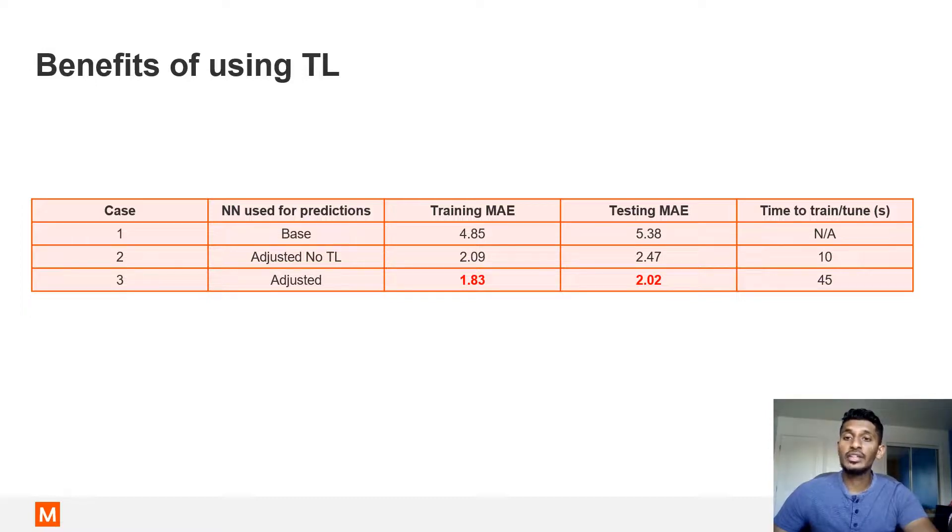For the final case, a learning rate of 0.0001 was used over 500 epochs to tune the neural network. The smaller learning rate over a higher number of epochs took around 45 seconds to tune the neural network, but resulted in the best training and testing mean absolute errors. Due to the large number of base model cases used to train the initial base neural network, the base neural network proved to capture the physics of the base model very well. Through transfer learning, with only a few cases of the adjusted model, this knowledge was effectively transferred to capture the physics of the adjusted model successfully.